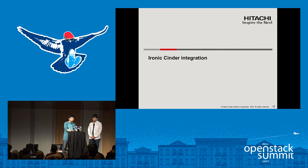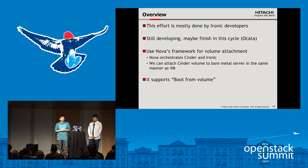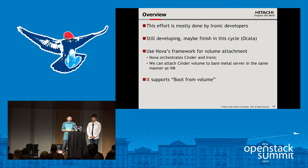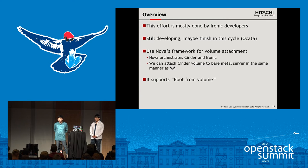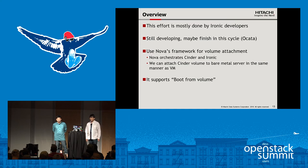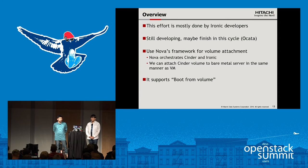Let's explain the first one: Ironic-Cinder integration. The Ironic-Cinder integration effort is mostly done by Ironic developers, but unfortunately it is still under development and may finish in this cycle. This integration uses Nova's framework to attach volumes, meaning Nova orchestrates Cinder and Ironic. We can attach Cinder volumes to bare metal servers in the same manner as VMs. The key difference from Cinder local volume attachment is that this approach supports boot from volume.